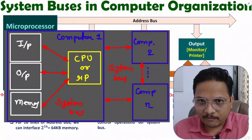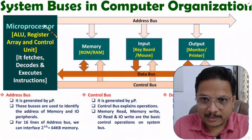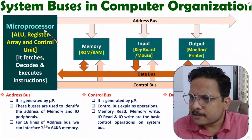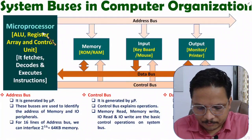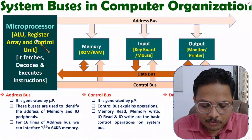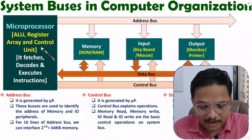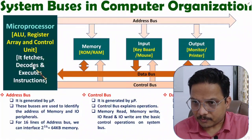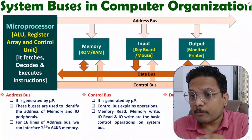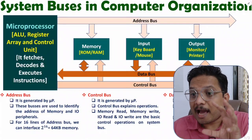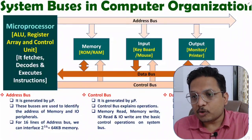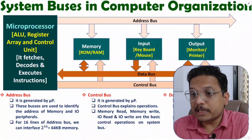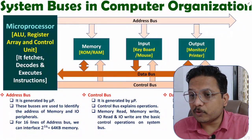Let me show you in the diagram. Here, the microprocessor is the main block — that is the CPU of the computer. With CPU, we are having ALU, we are having a register array, and we are having a control unit. That CPU will be executing instructions. And to work with a computer, we need to interface memory, we need to interface input devices, and we need to interface output devices.